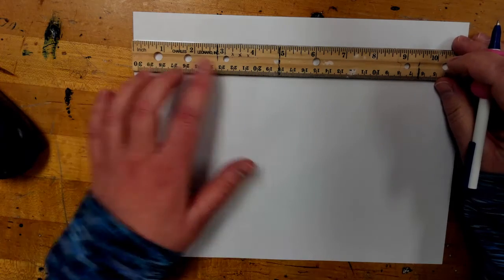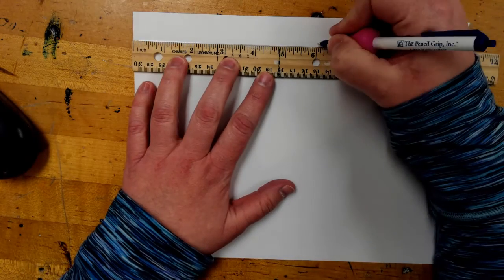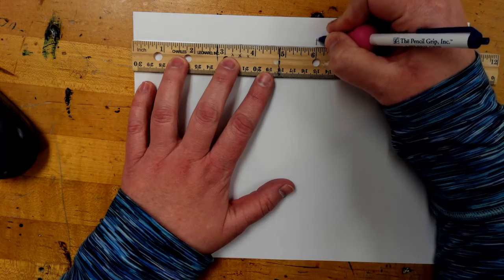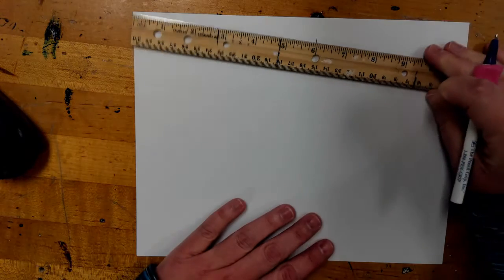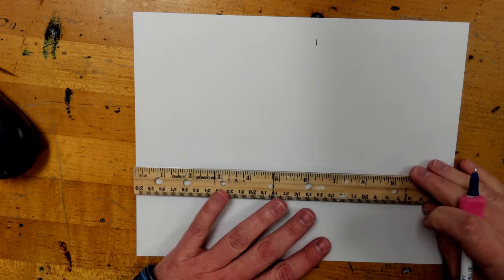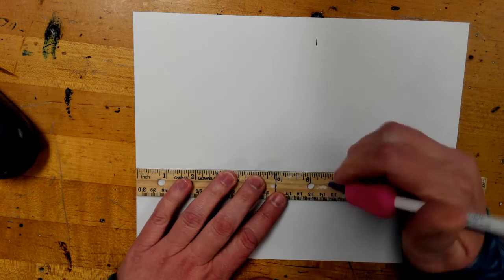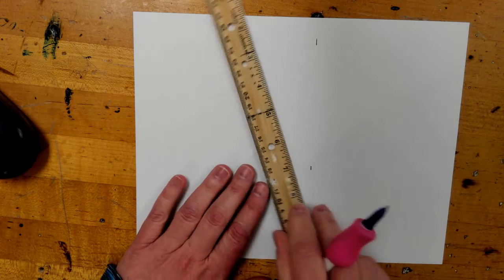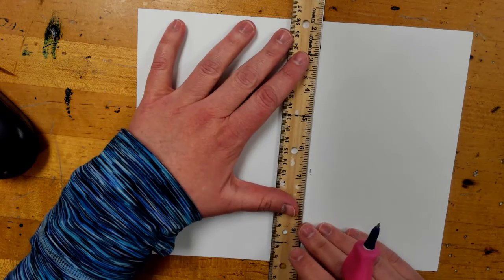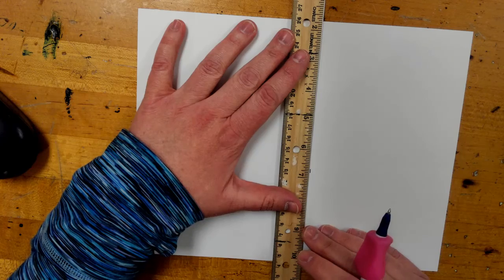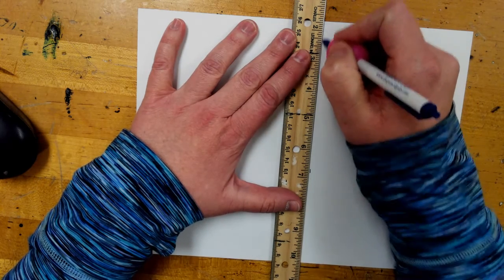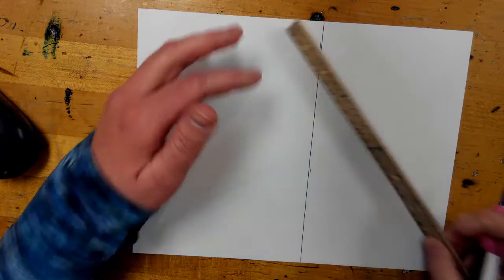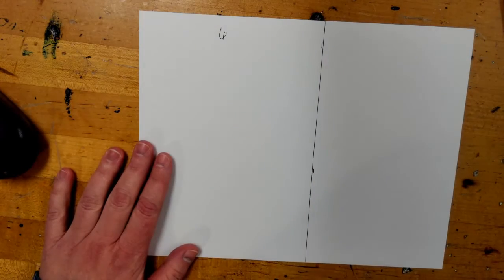To start to measure out, you're going to put zero on the edge, you're going to make a mark above that line right next to six, and then bring your ruler down and do the same thing. Zero on the edge, make a mark above six. Now, I'm going to turn my ruler, and I'm going to line up those two points, and then draw my line. Alright, so now I have six inches. I'm just going to label this six so I don't forget.